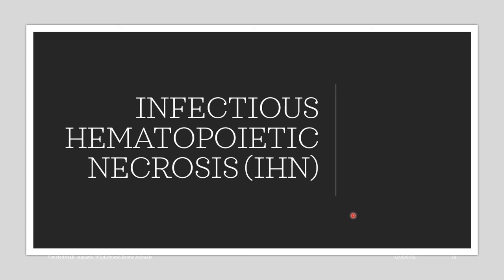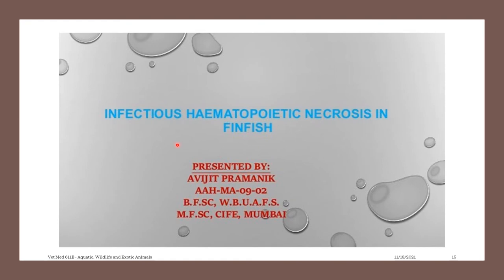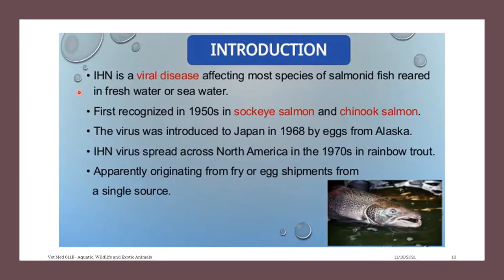Another major viral disease of fish in aquaculture is IHN, or infectious hematopoietic necrosis. IHN is a viral disease affecting most species of salmonid fish reared in freshwater or seawater. It was first recognized in the 1950s in sockeye salmon and Chinook salmon. The virus was introduced to Japan in 1968 by eggs from Alaska, and it spread across North America in the 1970s in rainbow trout, apparently originating from fry or egg shipment from a single source.